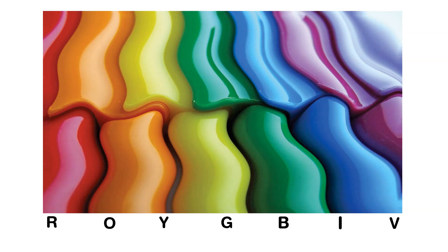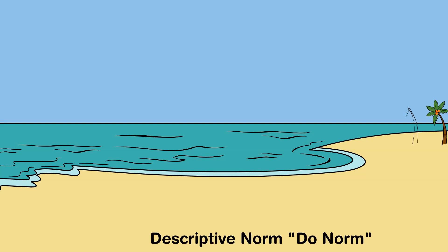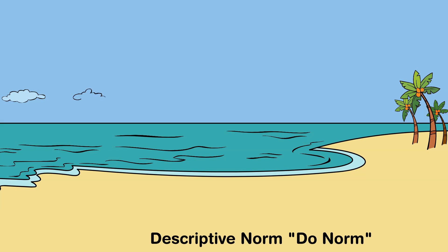As we wrap up this session, let's look at two final terms. One of the most powerful messages that we can receive is something called a descriptive norm. Descriptive norms involve our perception of what behaviors are typically performed. These norms are based on the observation of those and the environment around you. Simply, it is what we do — therefore it is sometimes referred to as the 'do norm.'